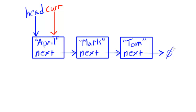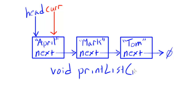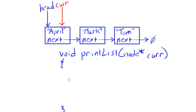We have the same sort of idea with a recursive function, except this time we're going to think about this current pointer existing as a formal parameter. So let's assume we're trying to write a recursive function to print out our linked list. It's a void-returning function, we'll call it print list, and we'll pass to it a node pointer — we'll just call it cur, just like in our iterative example. Then we have to start thinking about our base case and our recursive case.